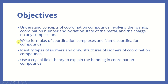The second topic: you're going to have to be able to write the formula of the coordination complex and also give the name of this coordination compound systematically. After that, we're going to learn about the different types of isomers which can occur among the coordination compounds. The last topic in this chapter would be about the crystal field theory, which we're going to use to explain the bonding within the coordination compounds.